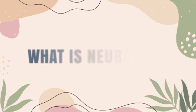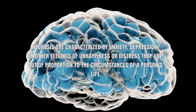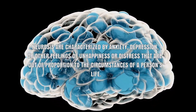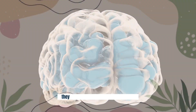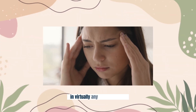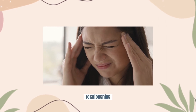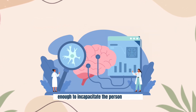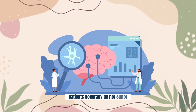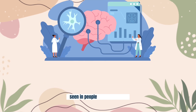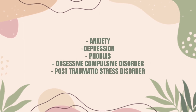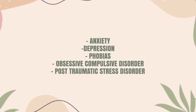What is neurosis? Neurosis is characterized by anxiety, depression, or other feelings of unhappiness or distress that are out of proportion to the circumstances of a person's life. They may impair a person's functioning in virtually any area — relationships or external affairs — but are not severe enough to incapacitate the person. Patients generally do not suffer from loss of the sense of reality seen in people with psychosis. Types of neurotic disorders include anxiety, depression, phobias, obsessive-compulsive disorder, and post-traumatic stress disorder.